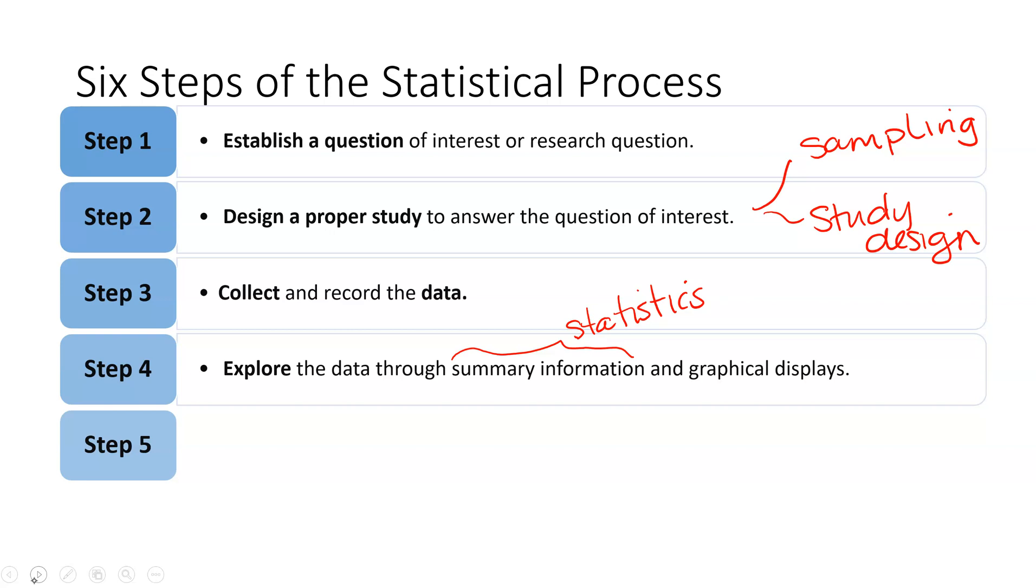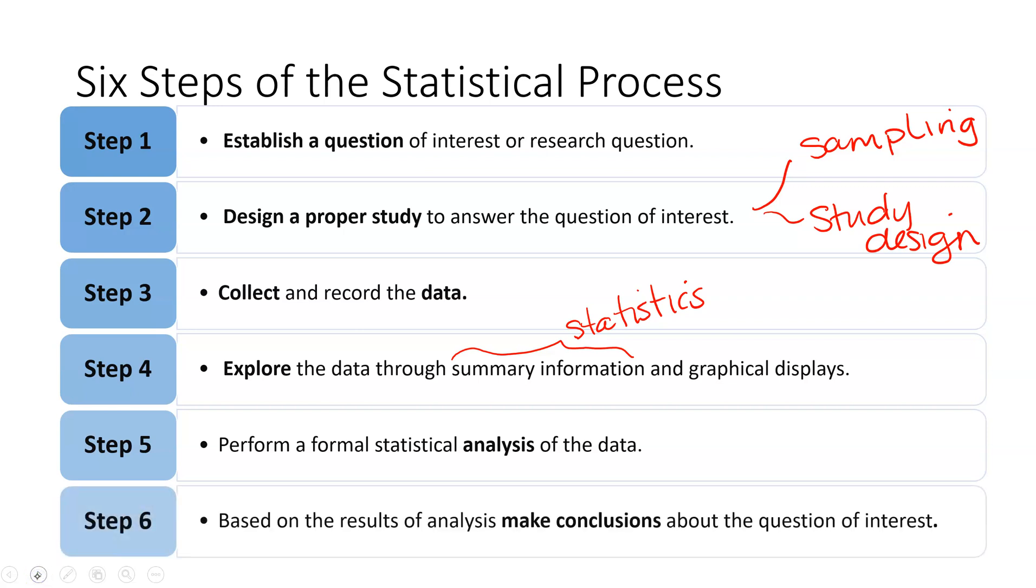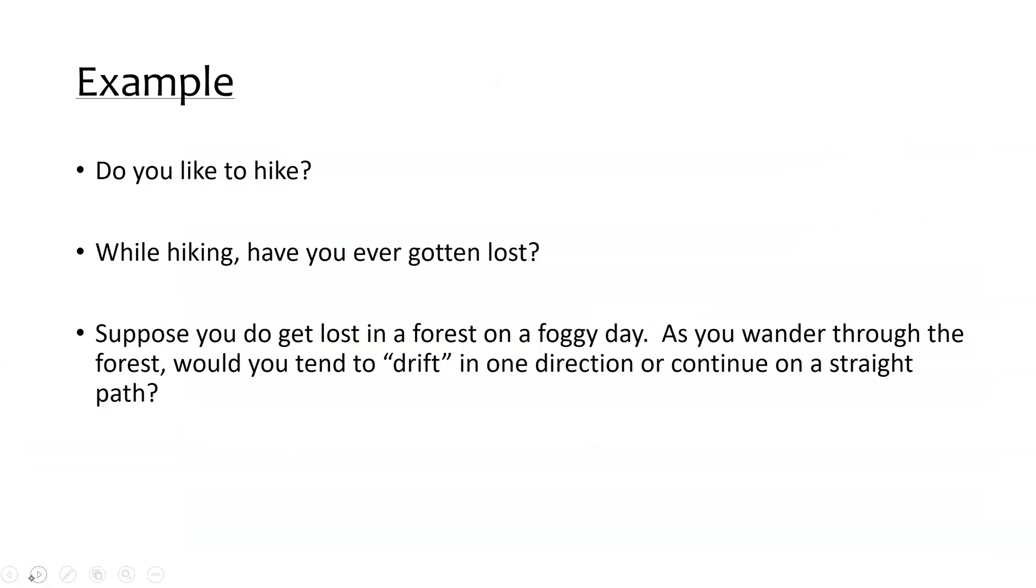But in step five we'll actually perform a formal statistical analysis, so we might calculate a confidence interval or we might conduct a hypothesis test, which will then eventually allow us to make a conclusion. So we'll be able to answer that original research question that we started with at the very beginning of this whole process.